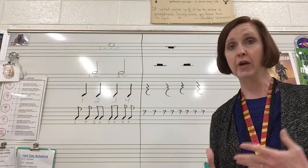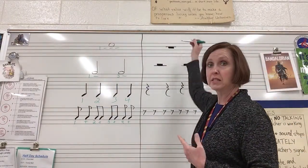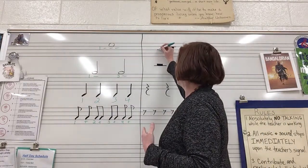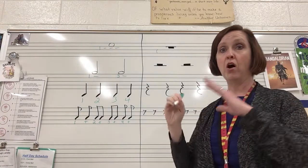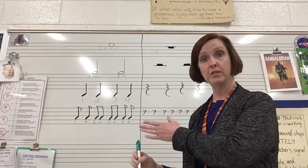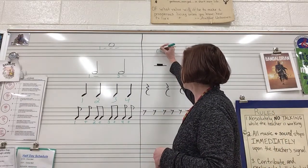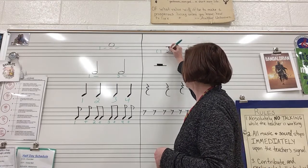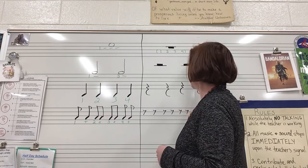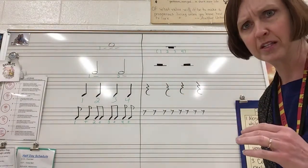We also have a way of writing counts for rests. With any rest — silence, not sustained sound — we always start with parentheses, then write the beat numbers that it occupies, then close with the other parenthesis. So if we're in 4/4 time and I have a whole rest, I put: open parenthesis, one, two, three, four, close parenthesis.